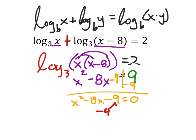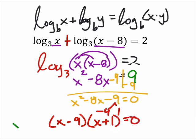And then I can split this up. 9 would split up with negative 9 and 1, because when I add those I would get that negative 8. So I got x minus 9 times x plus 1 equals 0, and that tells us that x is 9 and x is negative 1.